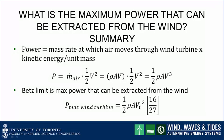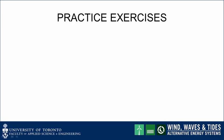Let's now summarize this lecture on the maximum power that can be extracted from the wind. Power can be calculated as the mass flow rate at which air moves through a wind turbine times the kinetic energy per unit mass, giving the simple expression one-half rho A v cubed for the energy available in the wind. The Betz limit gives the maximum power extractable from the wind: one-half rho A v0 cubed times the fraction 16 over 27. No wind turbine can do better than that — it represents an upper bound on performance. In the next lectures, we will look at how much power can be extracted by real wind turbines. Please try the questions that follow to practice calculating the maximum power available from the wind.